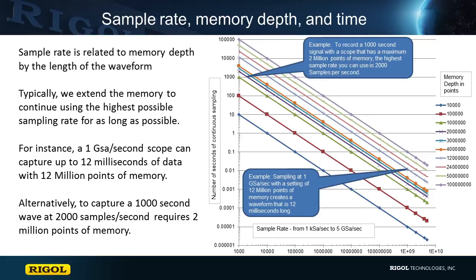The chart to the right shows a line color for different memory depth values from 10,000 points to 100,000,000 points. Along the x-axis is the sample rate settings from 1 kS per second up to 5 gigasamples per second. The y-axis shows how long in time can be continuously captured with the memory depth and sample rate settings. Note that these are all log scale axes.